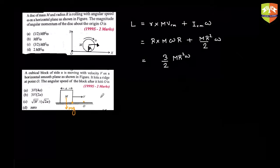It is like when two objects collide in air — you can conserve linear momentum just before and after. Similarly, since the torque due to mg is very small, I can conserve angular momentum just before and after the block hits the ridge. So the initial angular momentum of this block is m times v into a/2. The block is going straight and behaves like a point located at the center of mass, so angular momentum equals perpendicular distance times linear momentum.